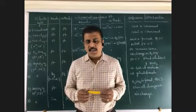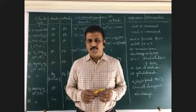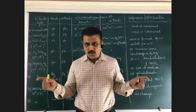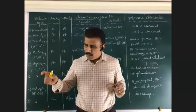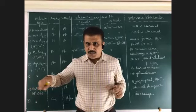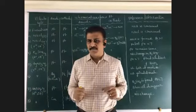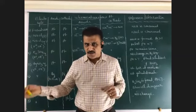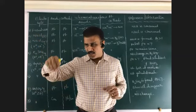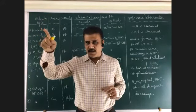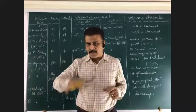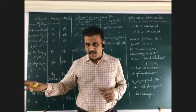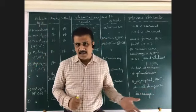Today I will discuss the electrolysis process in electrochemistry. In electrochemistry, there are two types of cells: electrochemical cell and electrolytic cell. In an electrochemical cell, chemical energy is converted into electrical energy. The Daniell cell is an example, in which the anode loses electrons, these electrons move through a wire so a bulb glows, and the circuit is completed.